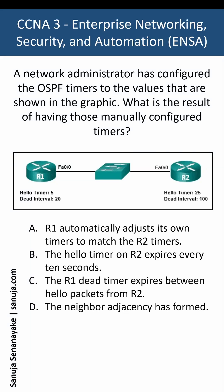A network administrator has configured the OSPF timers to the values shown in the graphic. R1 has a hello timer of 5 seconds with a dead interval timer of 20 seconds. R2 has a hello timer of 25 seconds with a dead interval timer of 100 seconds. They are connected through a switch in the middle.